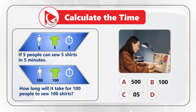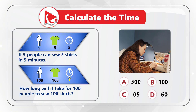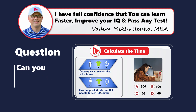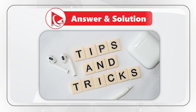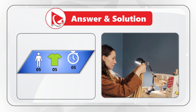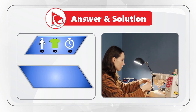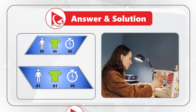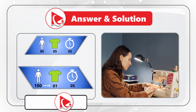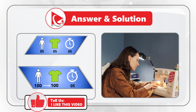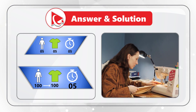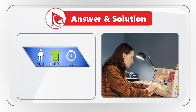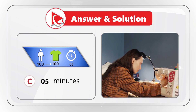Take a close look — maybe pause this video to see if you can get to the right answer. Here's the trick: if five people can sew five shirts in five minutes, we can say that one person can sew a shirt in five minutes. Now if 100 people work together, their combined productivity will be 100 times that of one person, so it will take 100 people just five minutes to sew 100 shirts. The correct answer is choice C, five minutes.